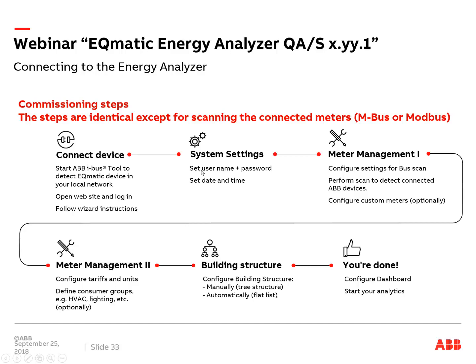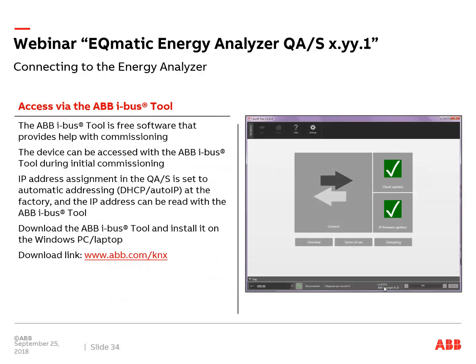After the wizard, start meter management: scan for meters, then configure them. If you use ABB meters, they are detected automatically and you don't need to configure data point types — a big advantage. You can additionally configure tariffs, units, and create consumer groups. The next step is creating a building structure with different floors and rooms, then linking meters to rooms. Finally, each user can create their own dashboard. After some hours, you can do analytics and see historical data.